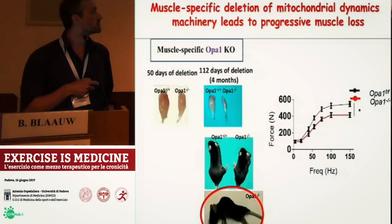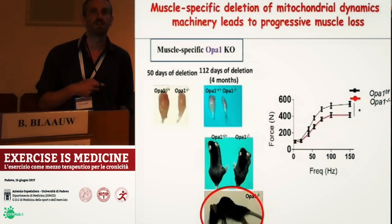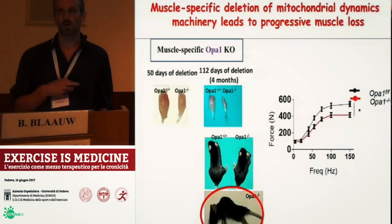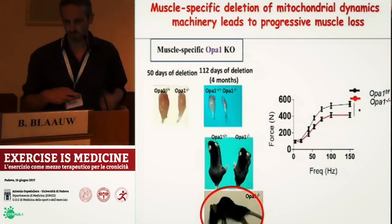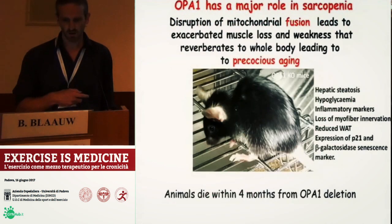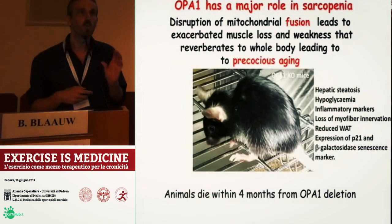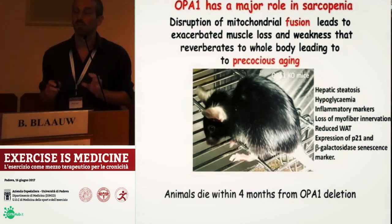Measuring muscle force, we find that the muscles in these animals are significantly weaker than the ones from control animals. This suggests that OPA1 has an important role in skeletal muscles.